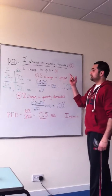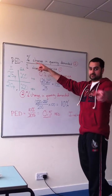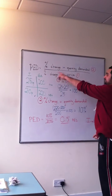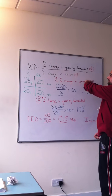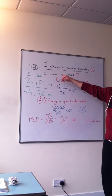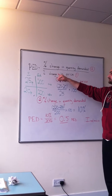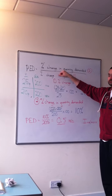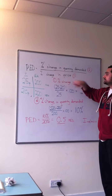So the formula — we're going to look at it quickly. It's the percent change in quantity demanded divided by the percent change in price. So ultimately, what's my change in sales over my change in price?